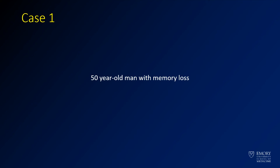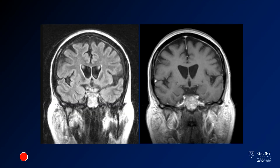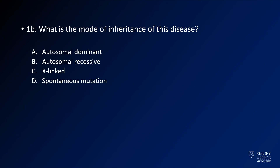The history for this first case is a 50-year-old man with memory loss. I'll give you some images and a couple of seconds to look at them, along with some additional images. Here are two questions: the first, and the second — what is the mode of inheritance of this disease?